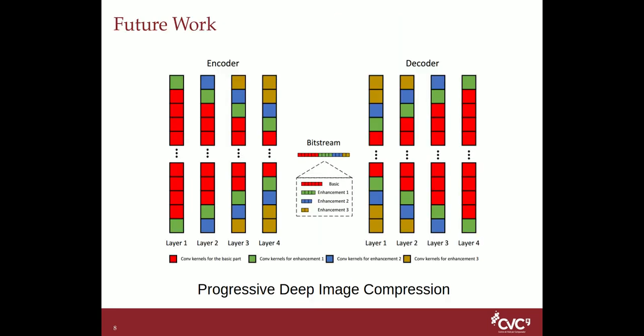For future work, we plan to explore deep progressive image compression with convolutional networks. This is another way to achieve variable rate, but the difference is it is suitable for progressive transmission, and it is possible to get preview reconstruction very quickly.